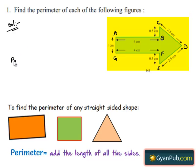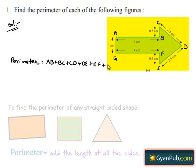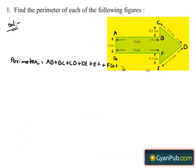So, we can write the perimeter as sum of the sides: AB plus BC plus CD plus DE plus EF plus FG plus GA.